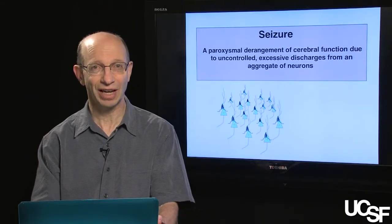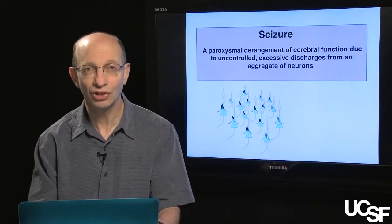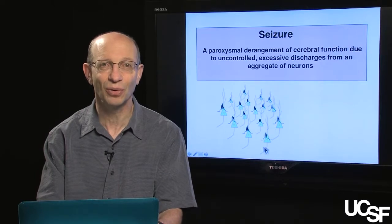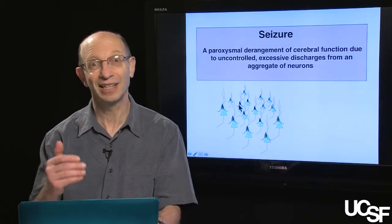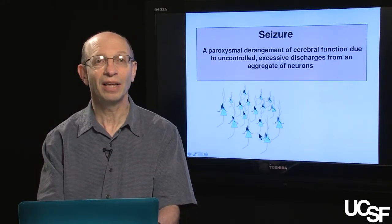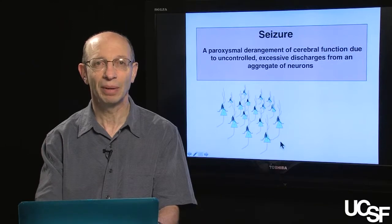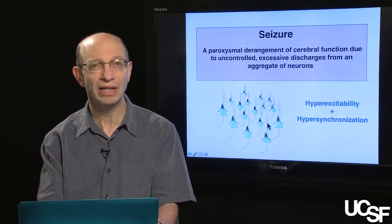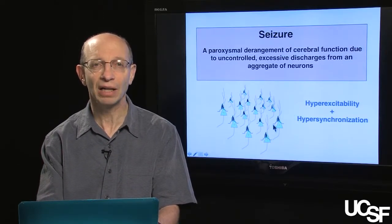With this information, you now should be able to understand the definition of a seizure. A seizure is a paroxysmal derangement of cerebral function due to uncontrolled excessive discharges from an aggregate of neurons. Here's a sea of neurons in the cortex. Each one of them is undergoing a PDS. They're not having the PDS at exactly the same time, but if these are occurring in a relatively constricted time period, you can understand why the EEG would be picking up a relative population spike of all these cells occurring at the same time.